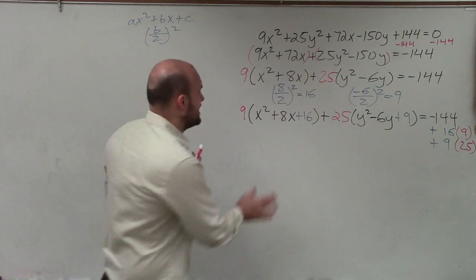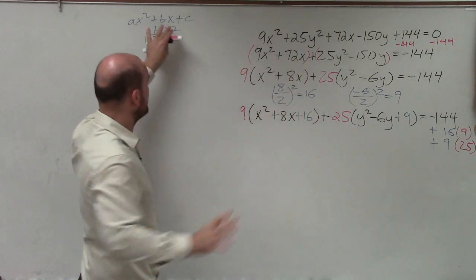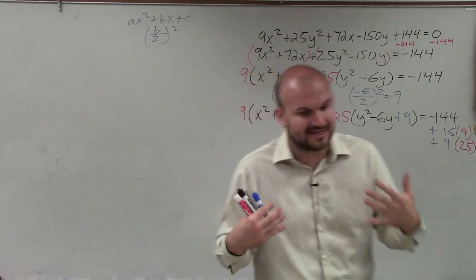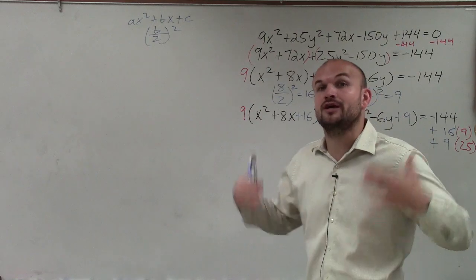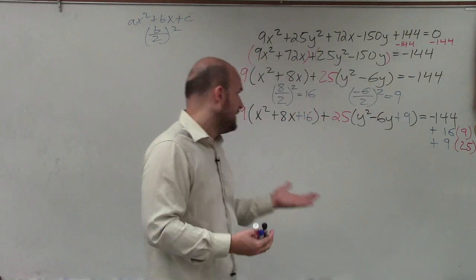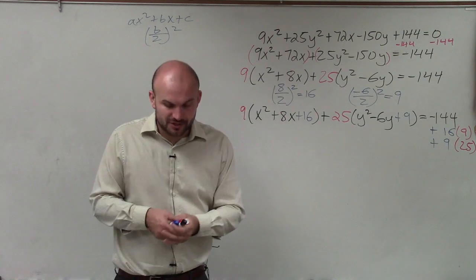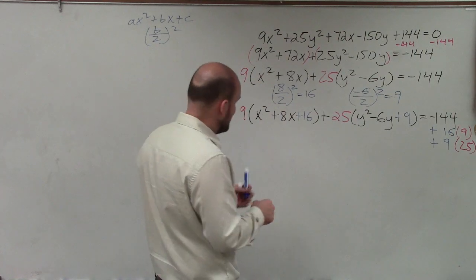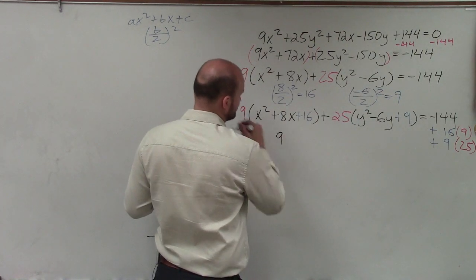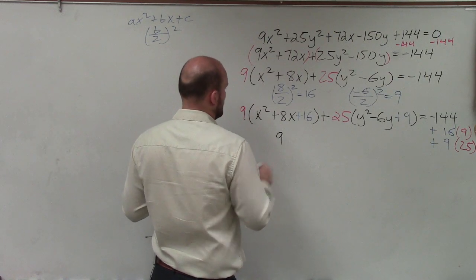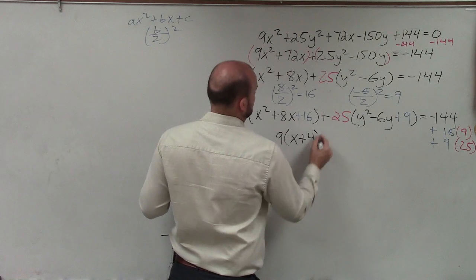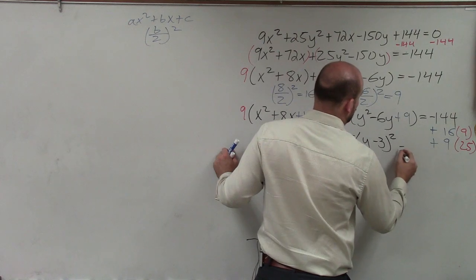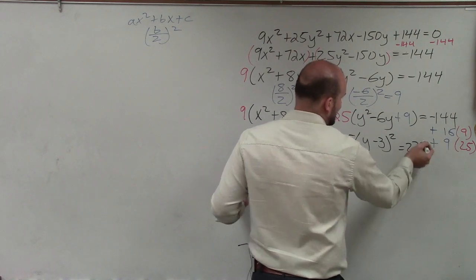The next thing I need to do is notice that each one of these parentheses created a quadratic. But what's important about completing the square is I created a perfect square trinomial, a perfect square quadratic, one that I can factor now down into a binomial square. So I'm going to factor each of these into binomial squares. When I do that, I now obtain 9(x + 4)² + 25(y - 3)² = 225, because all of that adds up to 225.